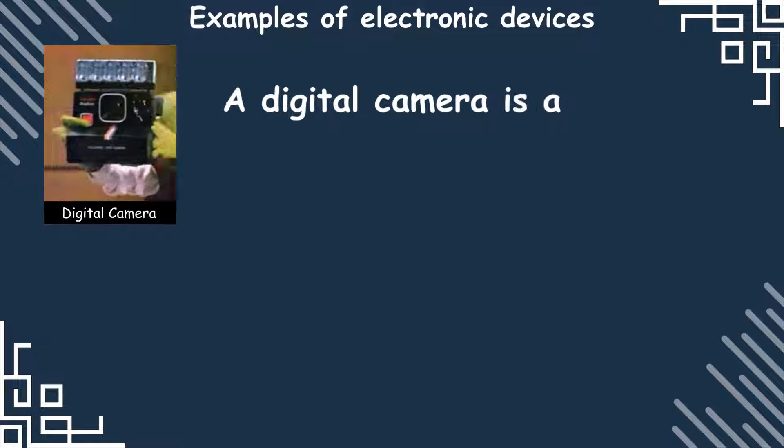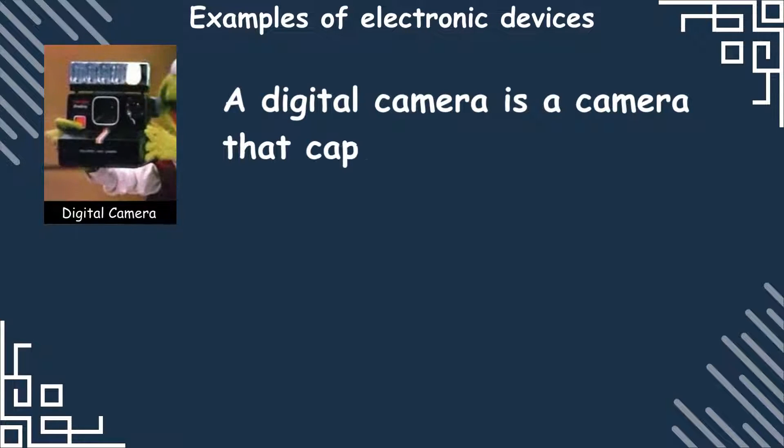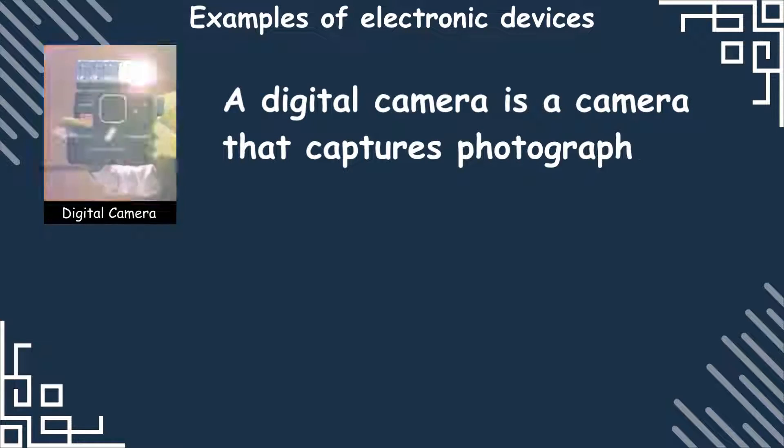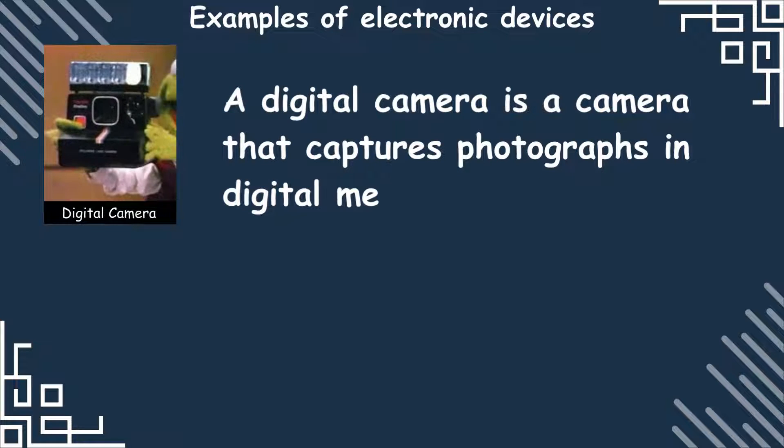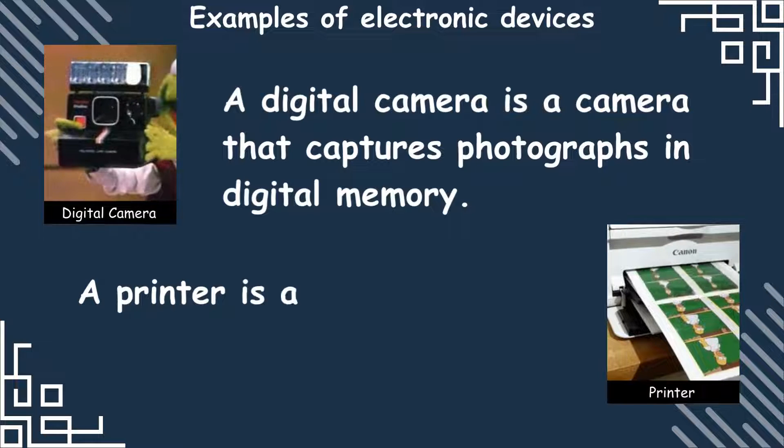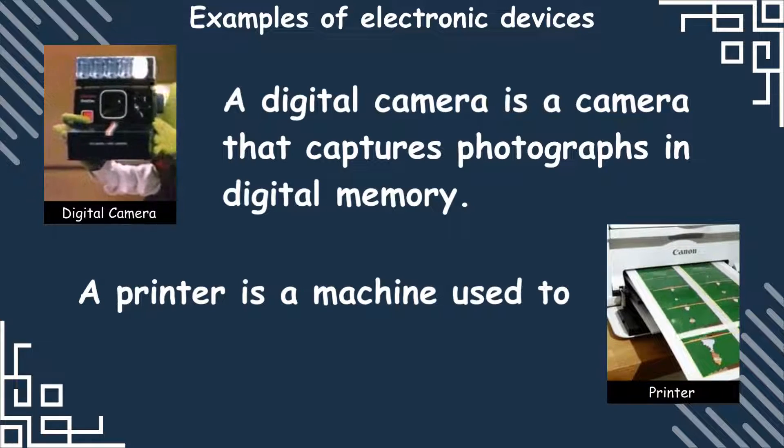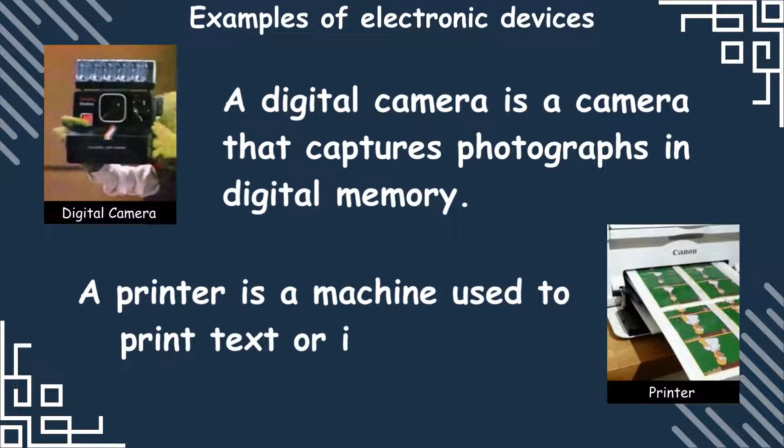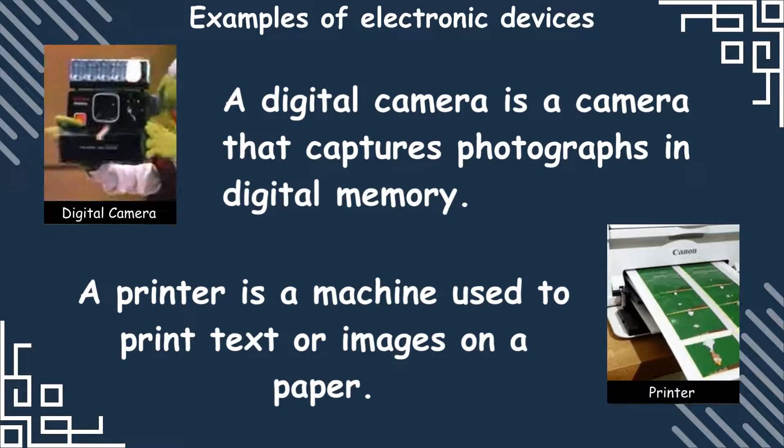Digital camera: A digital camera is a camera that captures photographs in digital memory. Printer: A printer is a machine used to print text or images on paper.